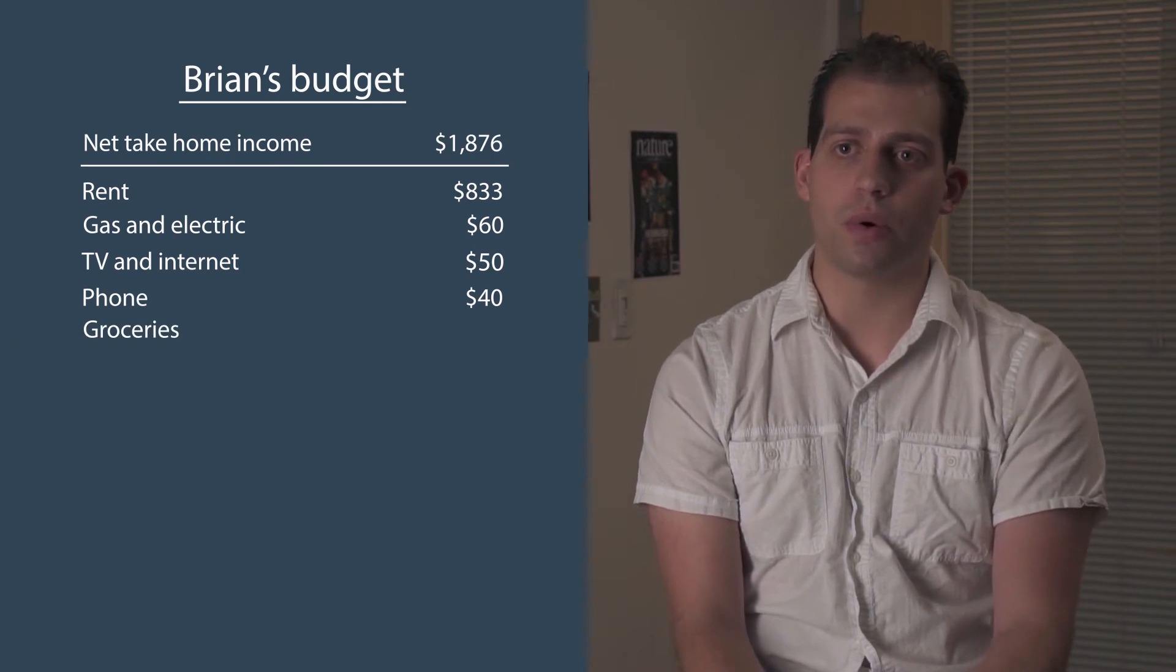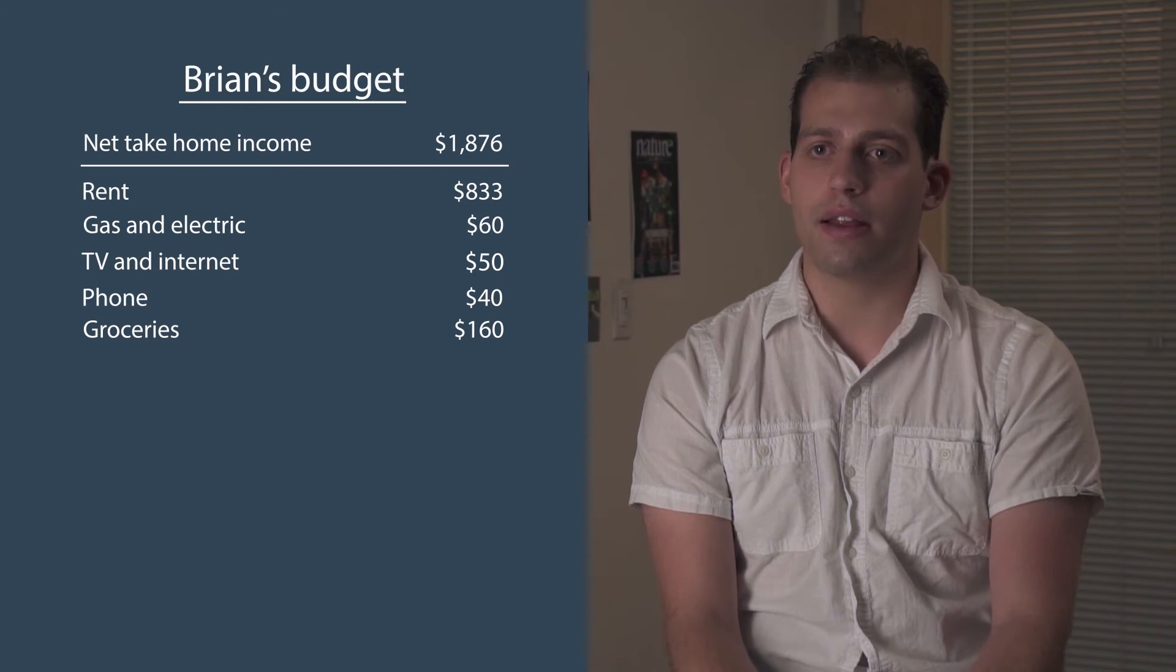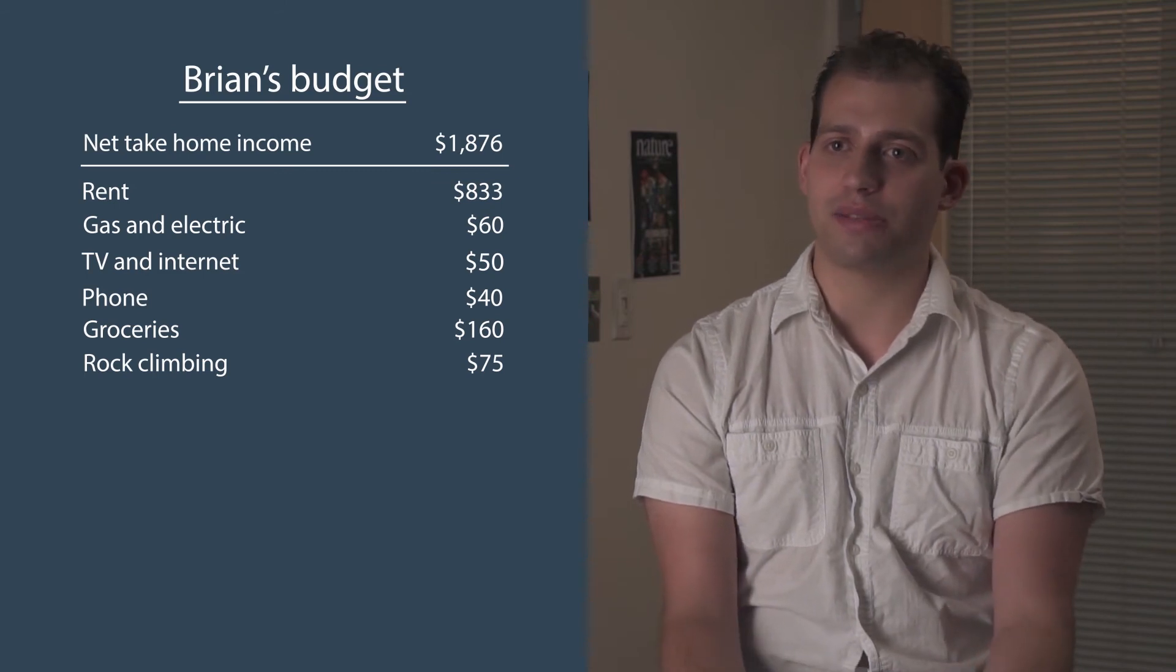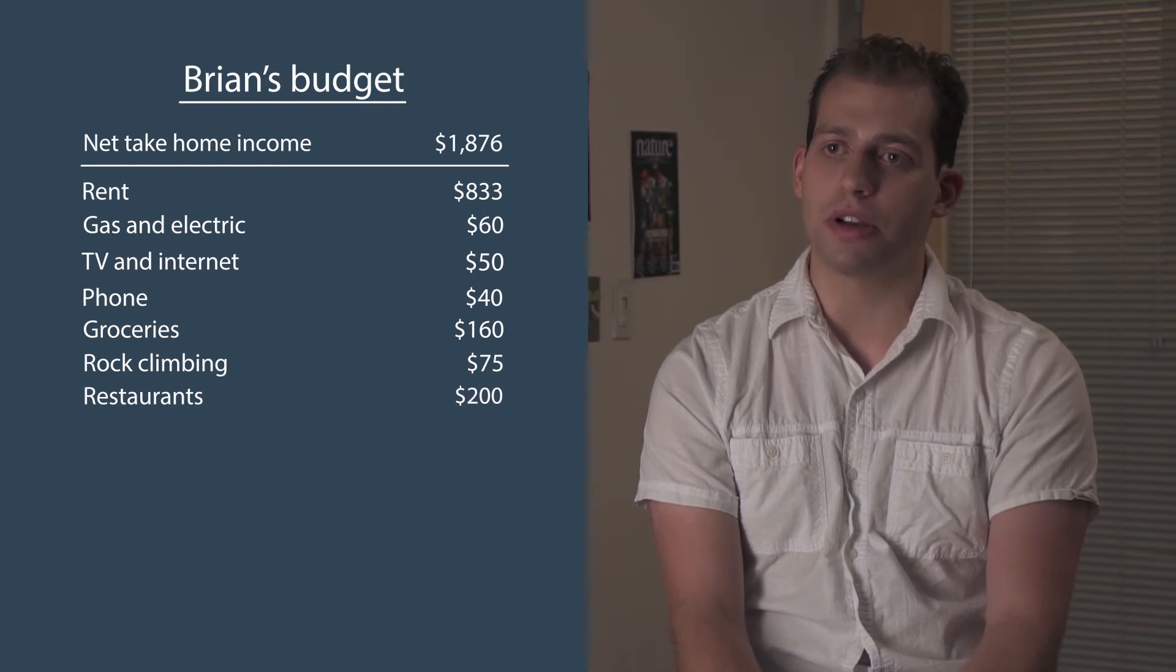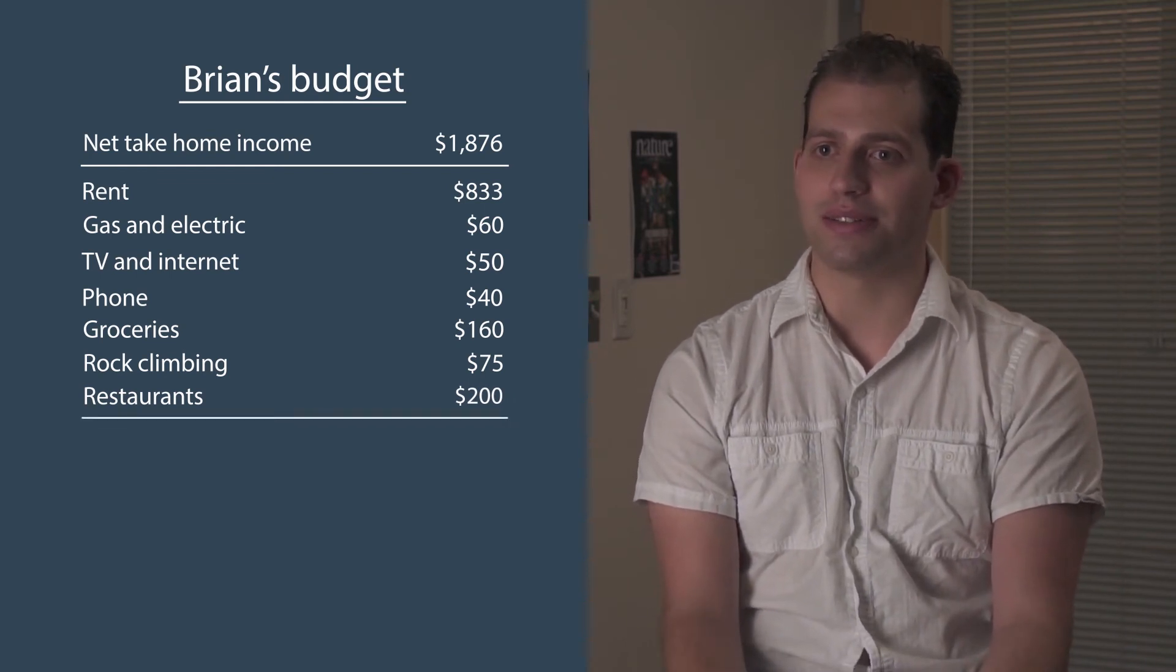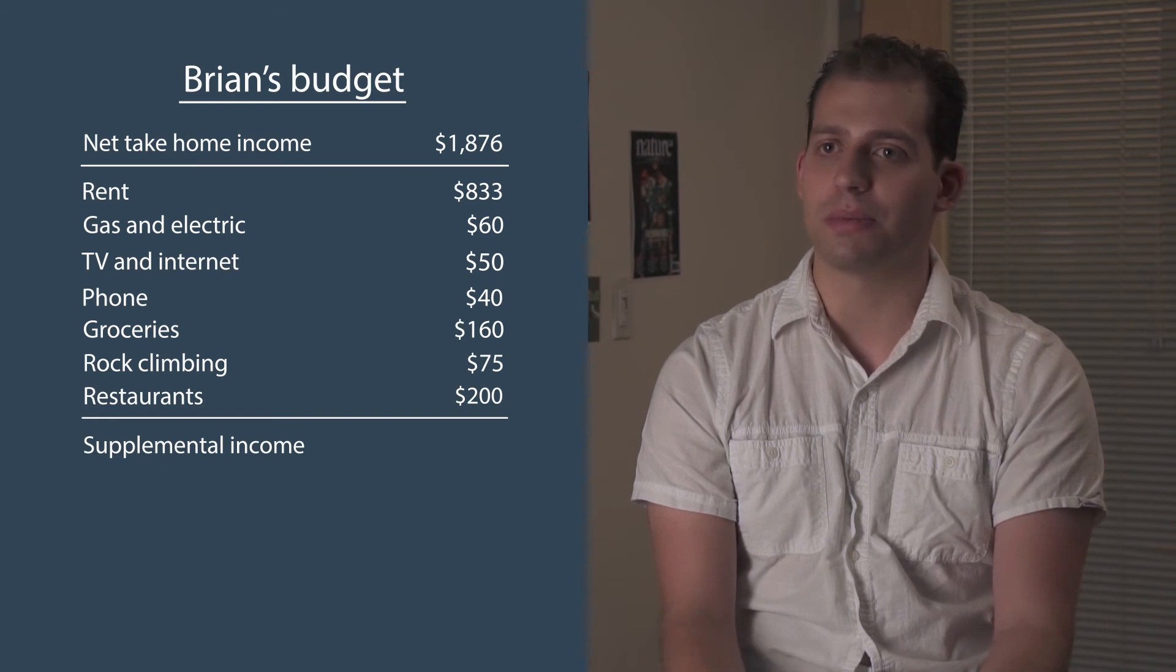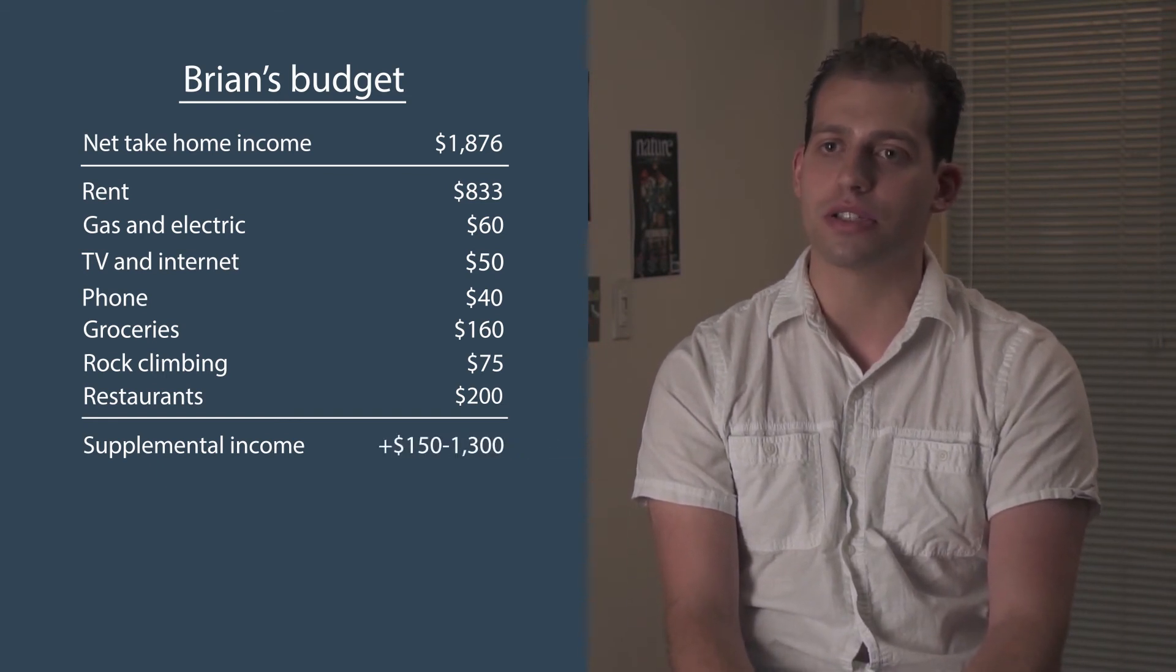Food, I budget about $40 per week for groceries, so $160 a month. And then I also enjoy going rock climbing, and so that's about $75 a month. And then also, because I can't just make food all the time, I do go out, and I budget about $200 a month for that. In the end, what I have left over is $418, and I guess about $0.61. And then I also have a few extra side income, because I still tutor, which can be anywhere from $150 to $1,300 a month, depending upon how much I tutor.